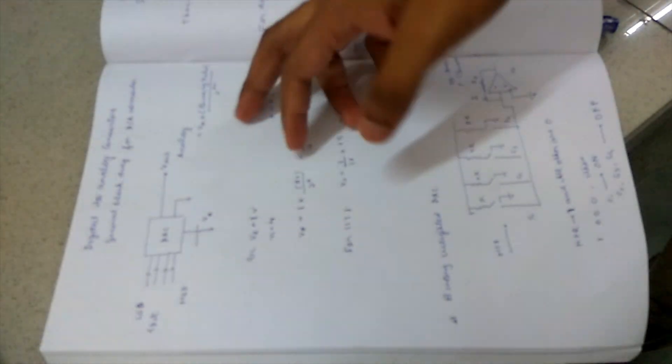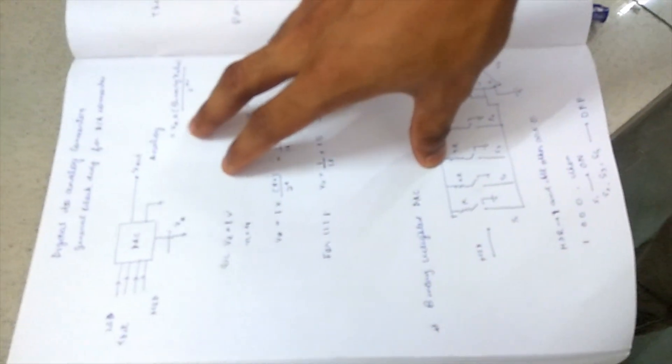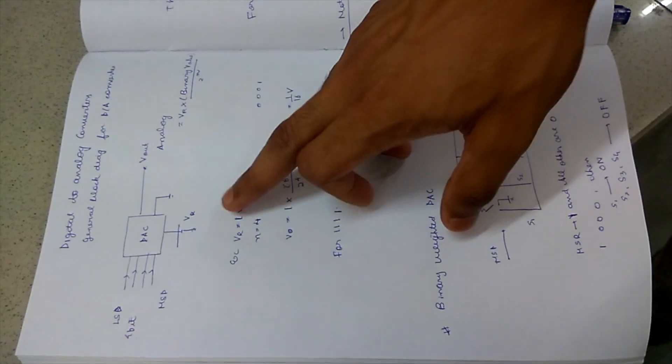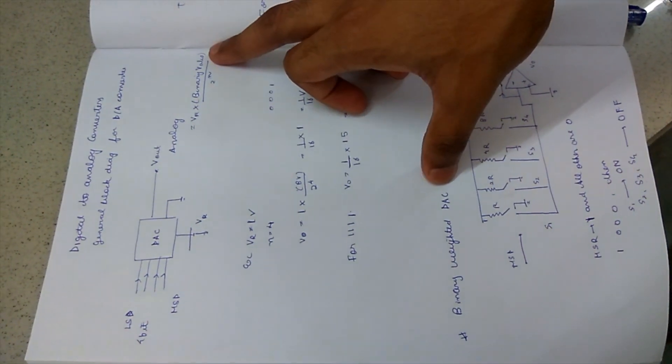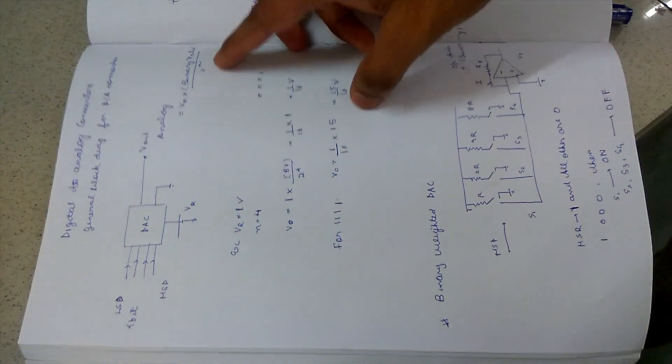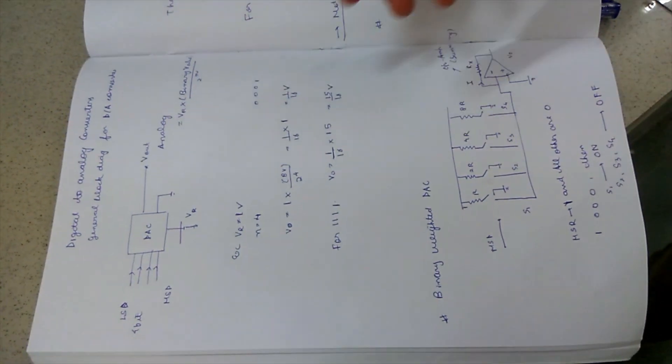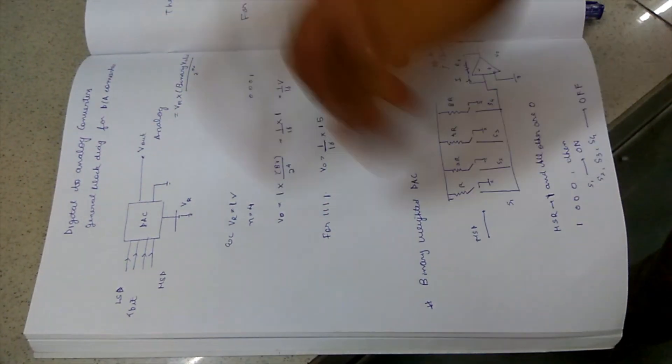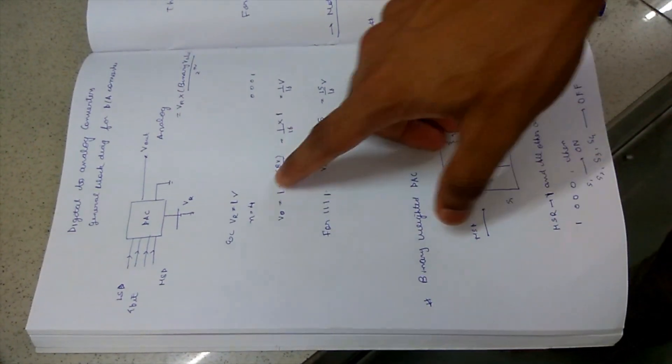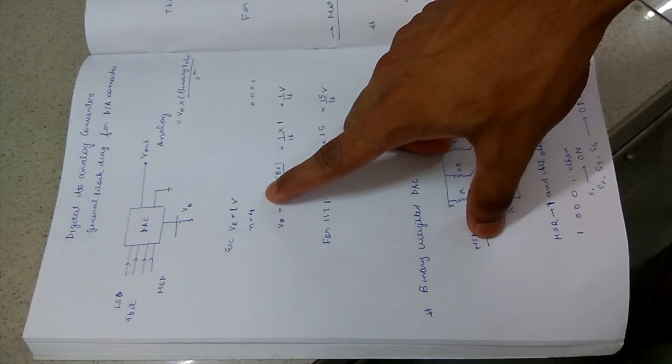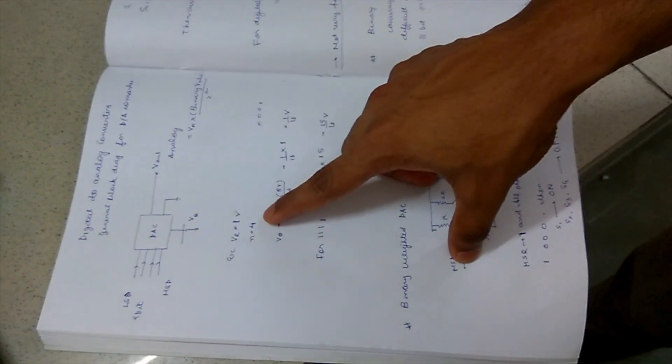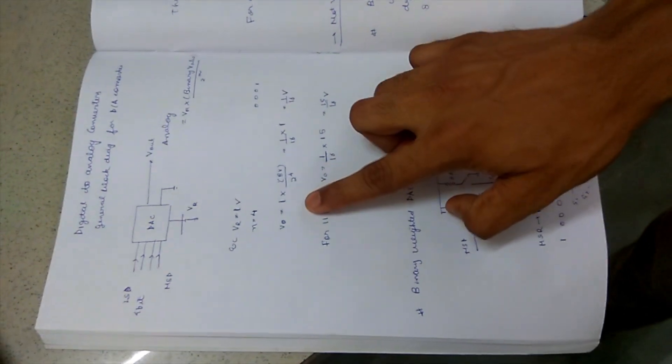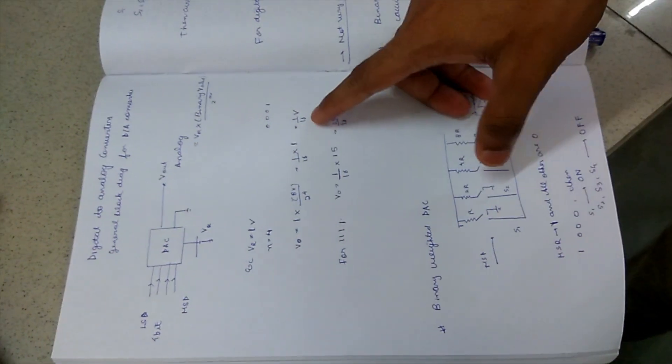The basic formula is that the analog signal given out is VR times the binary value taken as input divided by 2 raised to power n, where n is the number of bits, which in this case is 4. For example, if we take VR equals 1 volt and n equals 4 for a 4-bit digital-to-analog converter, we get Vout equals 1 by 16 volt.